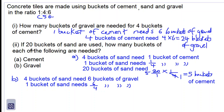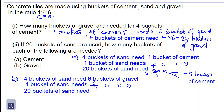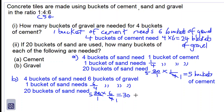Now let's find for 20 buckets of sand. Twenty buckets of sand need: we multiply 20 by six over four. So 20 over one times six over four — 4 into 4 is 1, 4 into 20 is 5, 5 times 6 is 30. So we have 30 buckets of gravel. That is our answer for part B of number two.